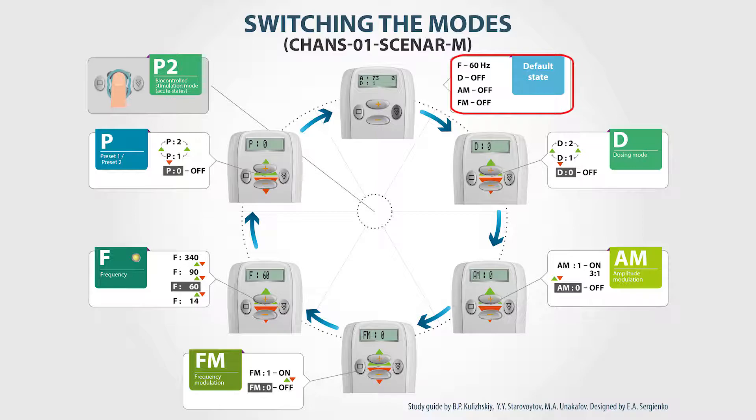To navigate the parameter menu, press the arrow button. Pressing the arrow button will change the symbols on the screen, showing the name of the parameter you can switch on or off. The available parameters are: dosing modes, amplitude modulation, frequency modulation, frequency, and the presets.